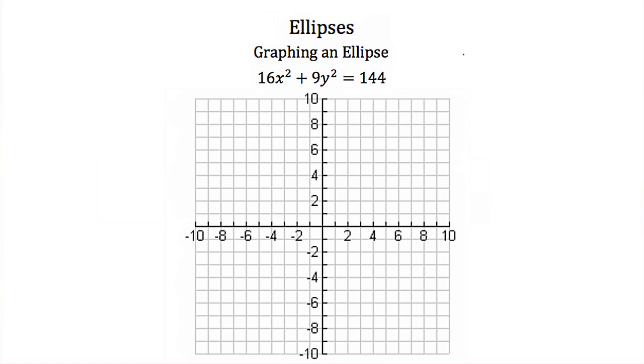We're going to take 16x squared plus 9y squared and that's equal to 144 and we're going to divide everything by 144.